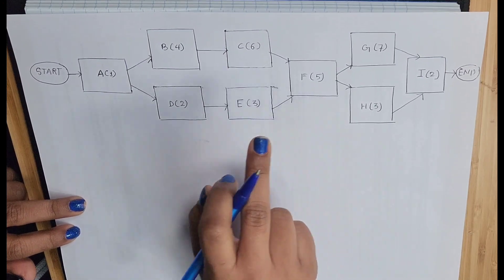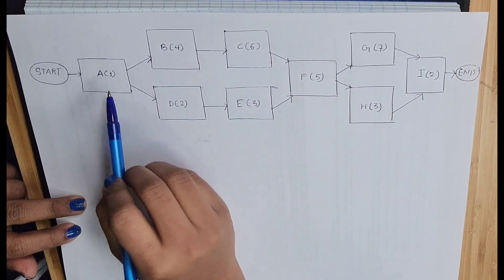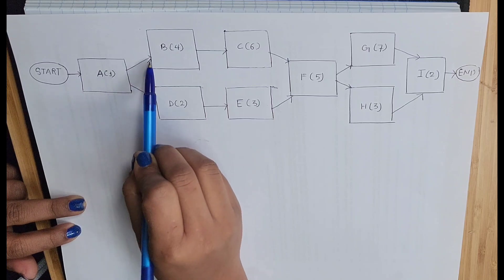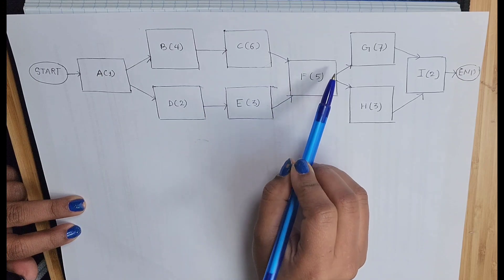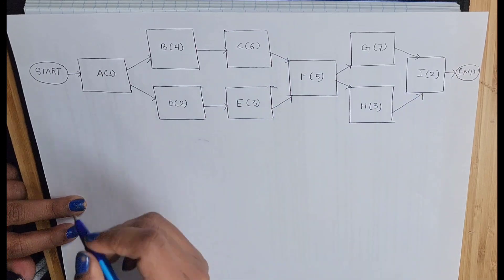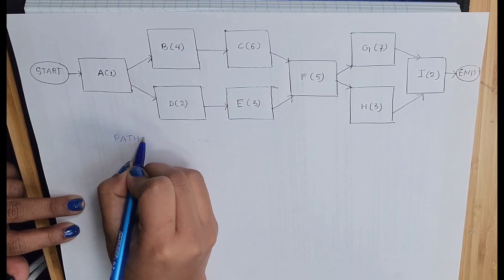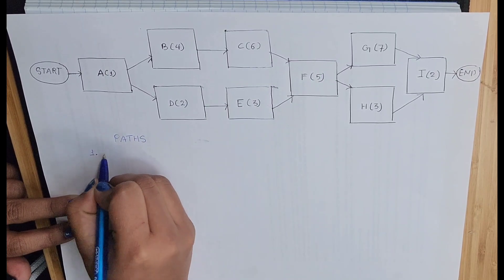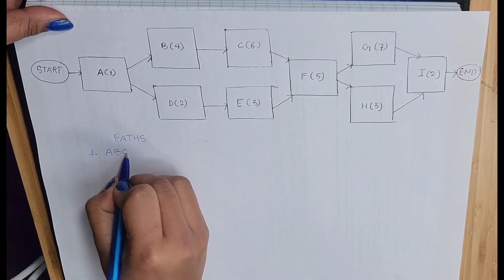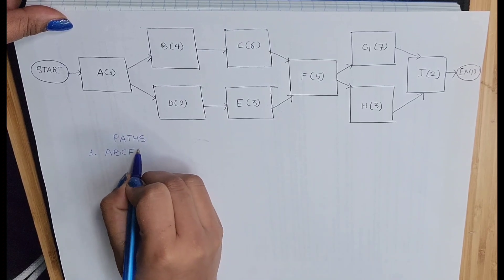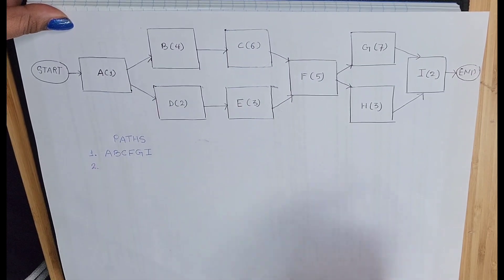All you have to do is calculate the duration of each path first. So first let's see how many paths are possible to start this activity and make this activity completed. So we can go through A to B, B to C, C to F, F to G, and G to I. So I'm writing here path. My first possible path is A-B-C-F-G-I.